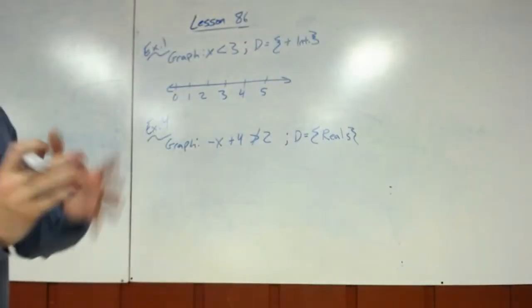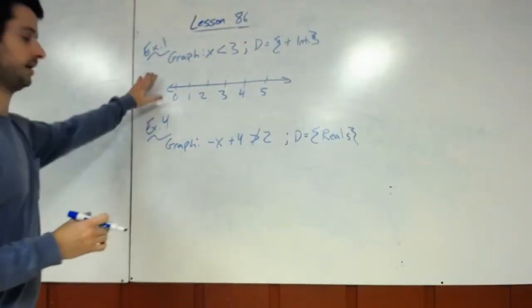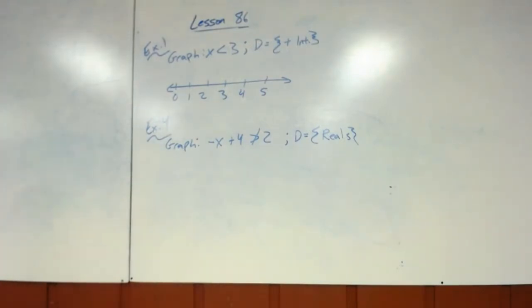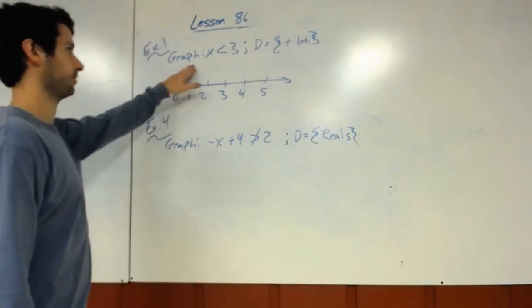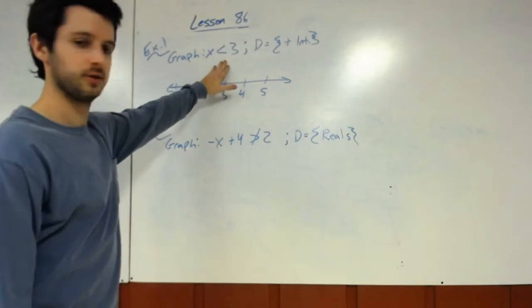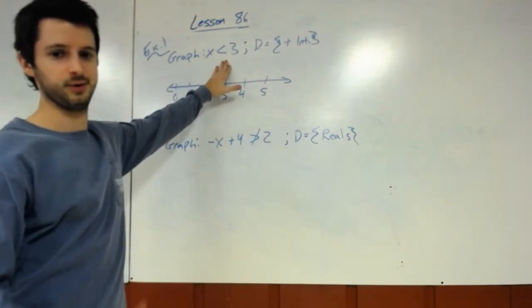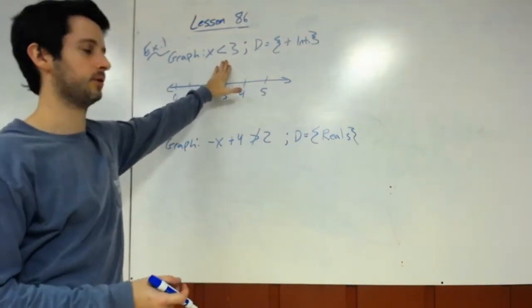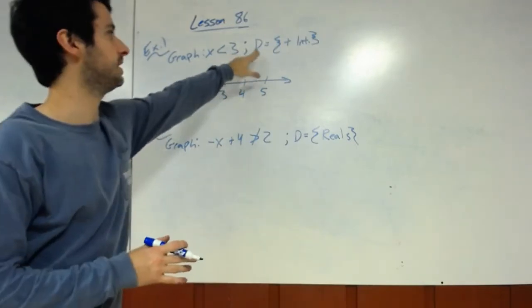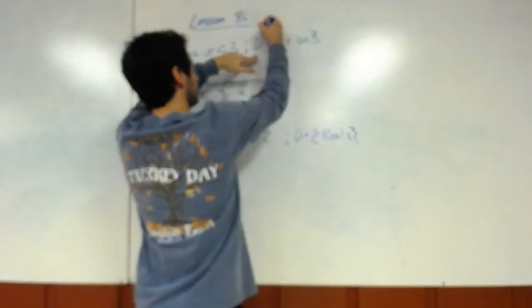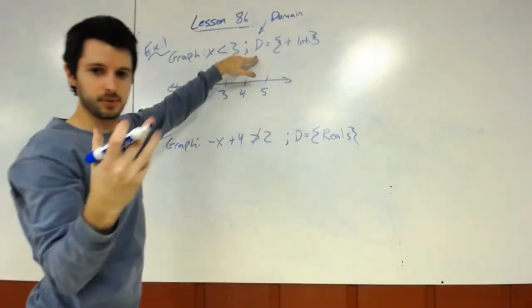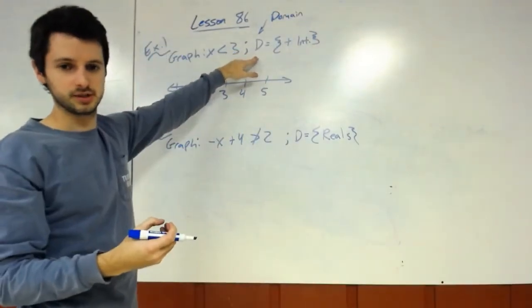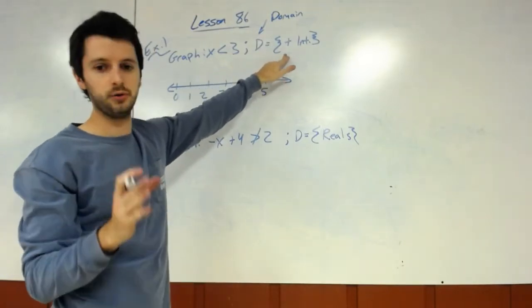Lesson 96, we're here to look at a few different concepts. The first one is just graphing a couple of different solutions. This one says graph x is less than 3. We've done graphing of x is less than whatever, greater than or equal to, but now it's giving a domain. D stands for domain. And what that means is just the possible numbers that it's looking for. So the domain here is only positive integers.